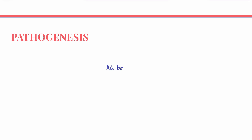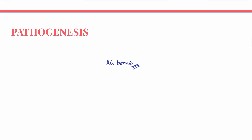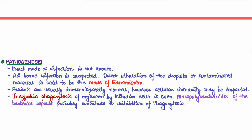The exact mode of infection is not known, but the mode of transmission is airborne. Direct inhalation of droplets or contaminated material is suspected to lead to disease development. Patients are usually immunologically normal. A key feature is ineffective phagocytosis of the organism by mononuclear cells, likely because Klebsiella rhinoscleromatis has a mucopolysaccharide capsule that inhibits phagocytosis.